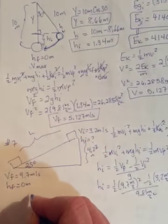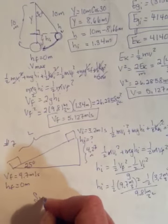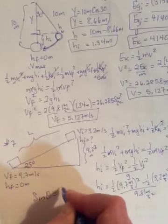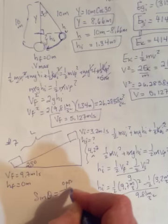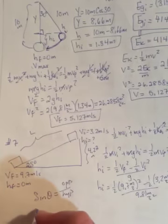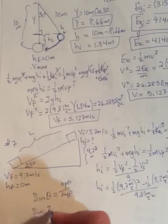I can find the length. It's just going to be sine theta is equal to opposite over hypotenuse. So sine of 25.